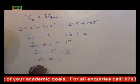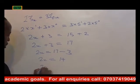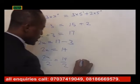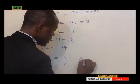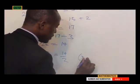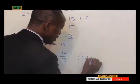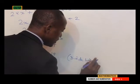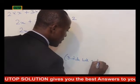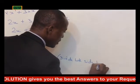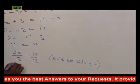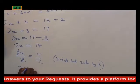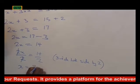Now we'll divide both sides by 2. There will be 2x over 2 is equal to 14 over 2. Dividing both sides by 2, what we're having is x is equal to 14 over 2, which is 7.